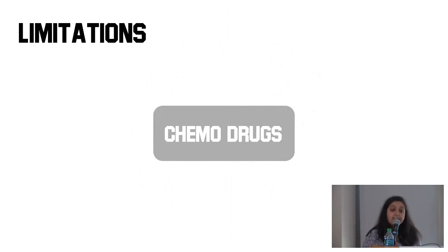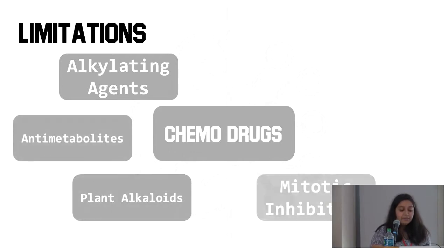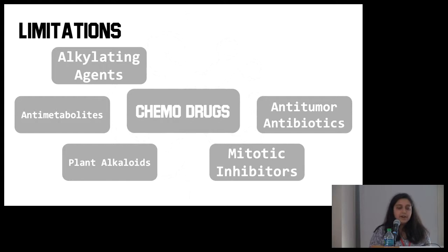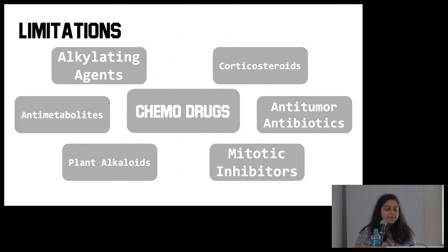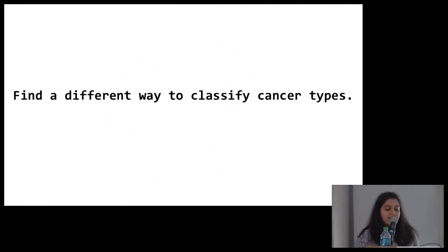And one last note on that, chemo drugs and drug treatment plans need to be specialized to the patient. If you're going back to the brain cancer example, if you only call something as brain cancer, you're missing out on all of the things you could gain by figuring out a different way to classify it. It's really important to know the specific cancer you're working with when you're treating it and figuring out a treatment plan. So the goal of my project is finding a different way to classify cancer types.